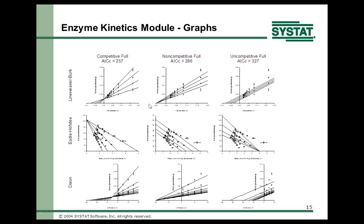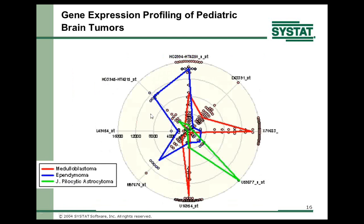This is an example of pediatric brain tumor data showing genes. It demonstrates how useful radar plots can be: eight variables are all shown in one graph. The response of different individuals for each gene is along one axis, so the radar plot is a way of showing multiple axes simultaneously.